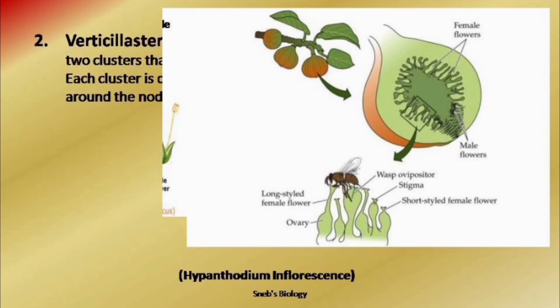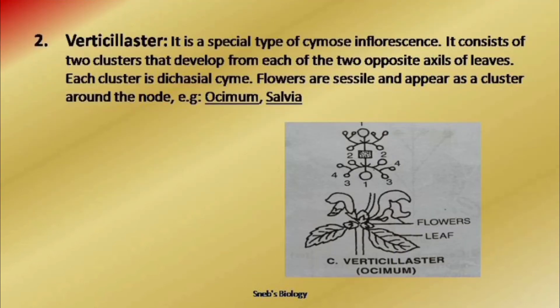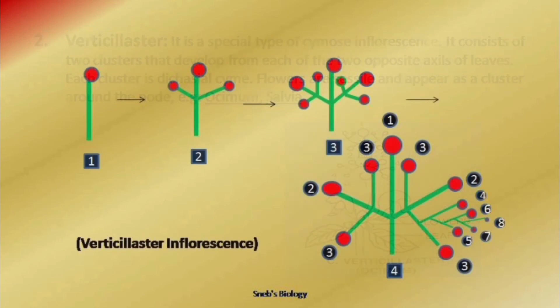Hypanthodium is a very special type of inflorescence with incomplete male and female flowers. The next special type is known as verticillaster, found in Ocimum and Salvia. It is the combination of biparous cyme and uniparous cyme.